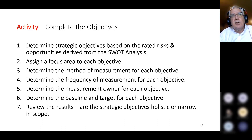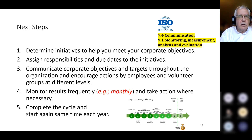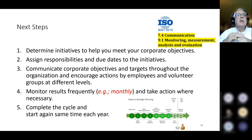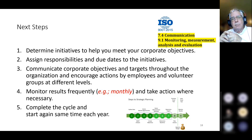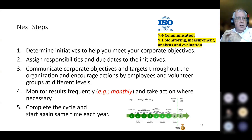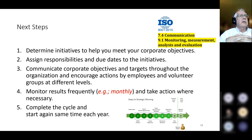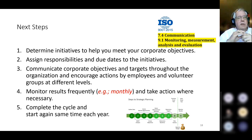Consider whether the strategic objectives are holistic or very narrow in scope. After that, these are the next steps: determine the initiatives to help meet your corporate objectives — this is when you can also determine how much you think it's going to cost. Assign responsibilities and due dates to the initiatives. Communicate these objectives and targets throughout the organization and encourage actions by employees, because otherwise you're relying on a small group to make things happen. Monitor the results frequently — monthly is suggested. Quarterly doesn't give enough time to change direction. When finished, complete the cycle and start again at the same time each year.